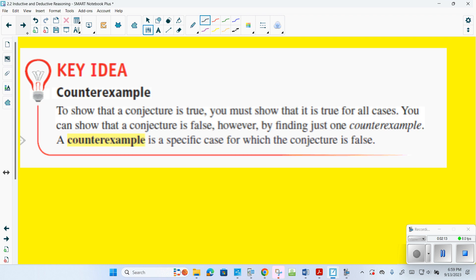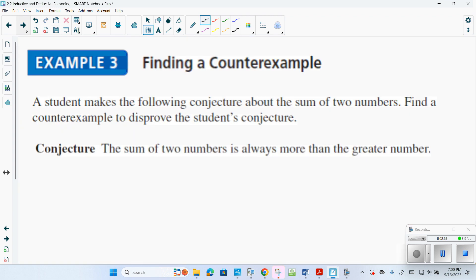A counterexample. To show a conjecture is true, you must show that all the cases are true. So a counterexample is to show something is false. If I make a statement and you come up with a counterexample, my statement is now false, because the counterexample is a specific case in which my conjecture is false. A student makes the following conjecture about the sum of two numbers. Find a counterexample and disprove it. The sum of two numbers is always more than the greater number. What happens if I end up getting a negative number? The sum of two numbers is not always more than the greater number. Notice this one is smaller than seven. So that's a counterexample, an example that makes the statement false.